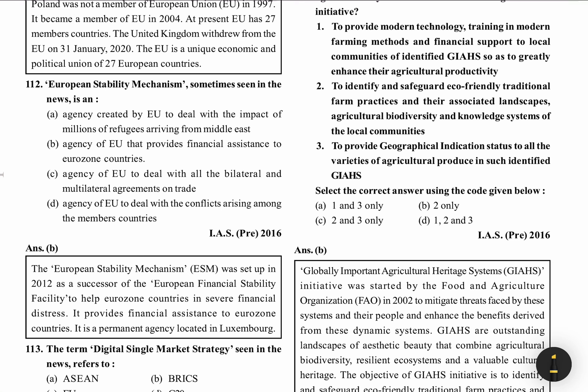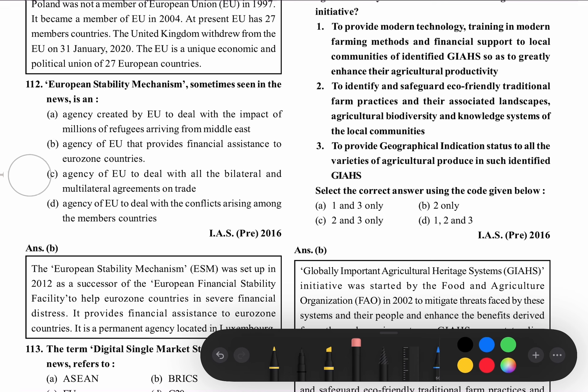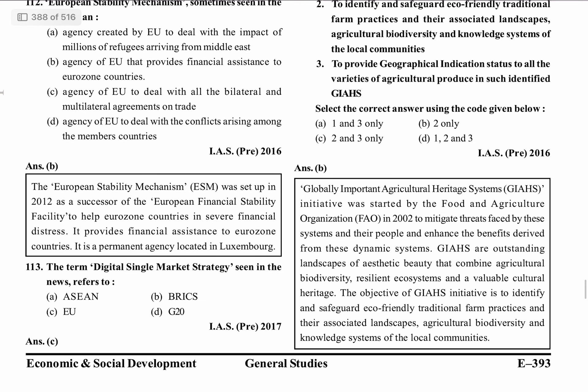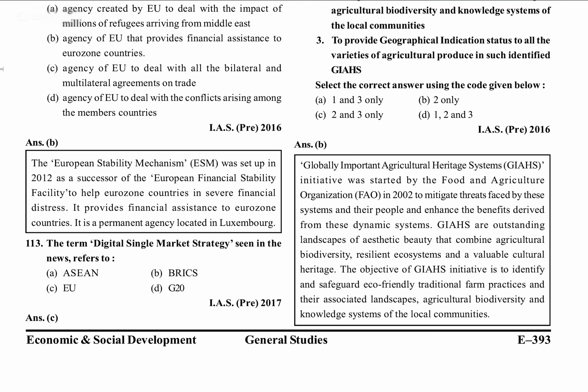What is European Stability Mechanism? This is an agency which provides financial assistance to the eurozone countries. European Stability Mechanism was created in 2012. This is a successor of European Financial Stability Facility which helps eurozone countries in severe financial distress. It gives financial assistance to eurozone countries and is a permanent agency located in Luxembourg.